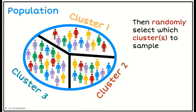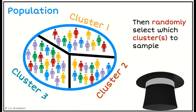So once I've done that, I then need to randomly select which clusters to sample. So this is when I randomly choose out of the hat. And in this particular one, we've randomly chosen cluster three to sample.